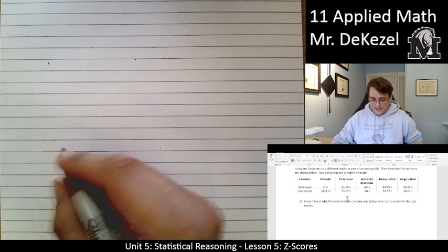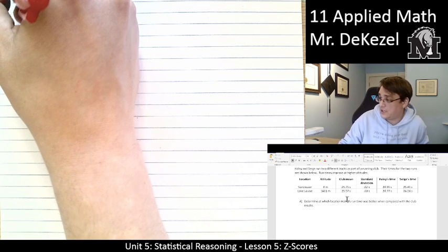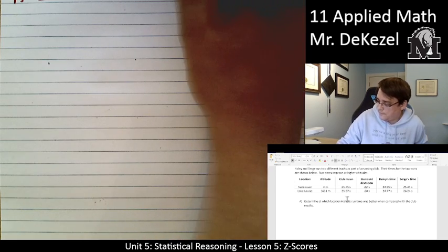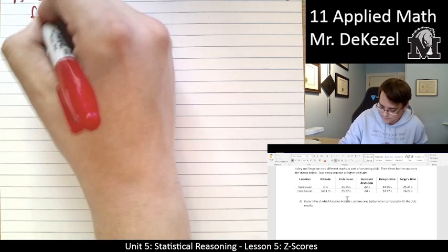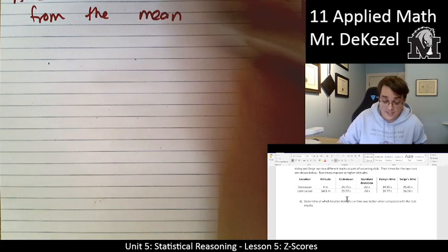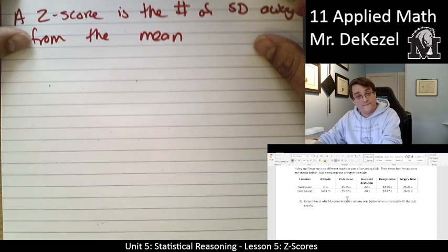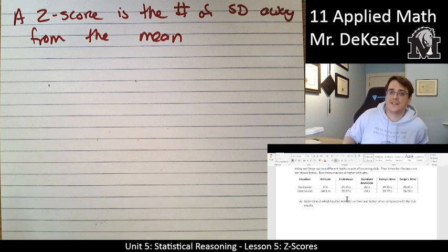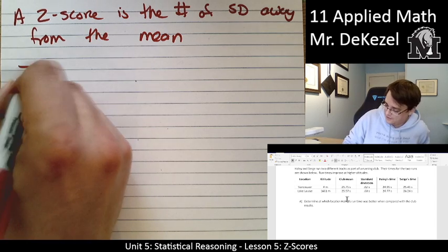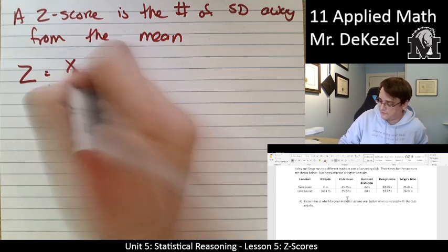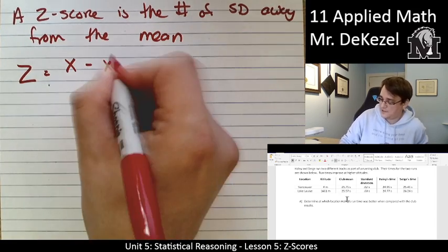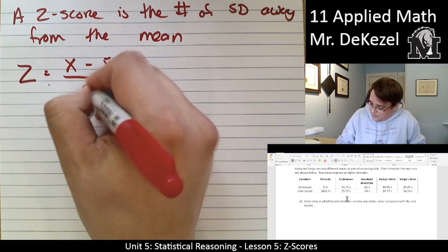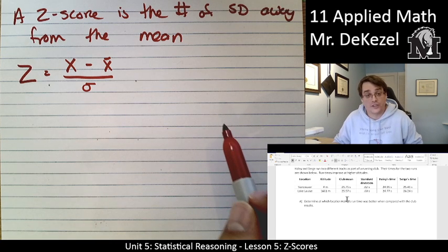Let's calculate z-scores. A z-score is the number of standard deviations away from the mean. The formula is: z equals the value minus the mean (x-bar), divided by the standard deviation (sigma).